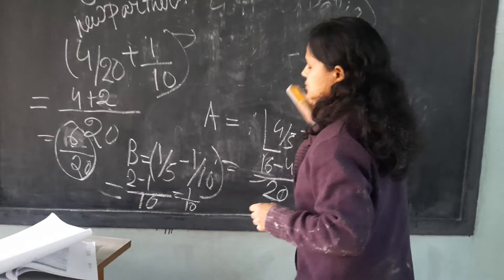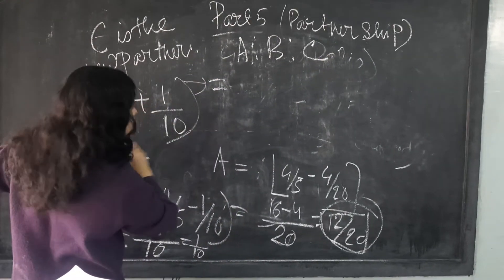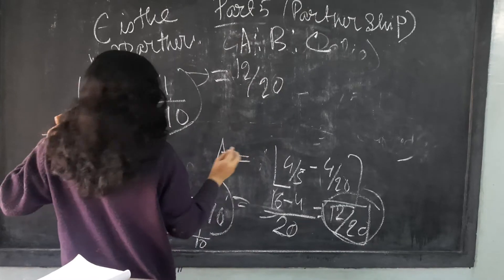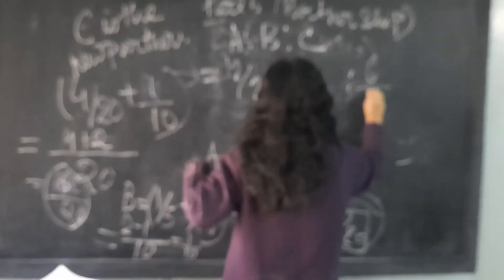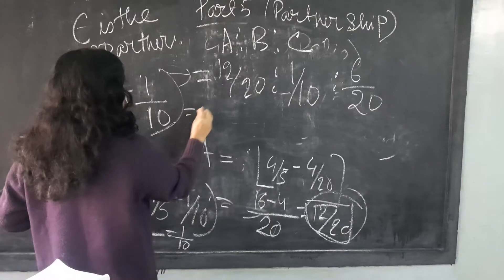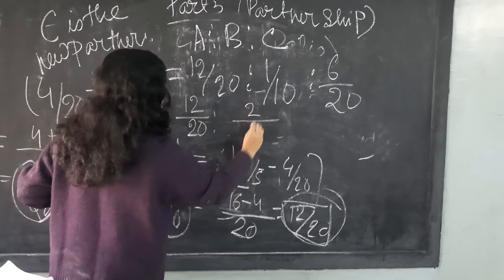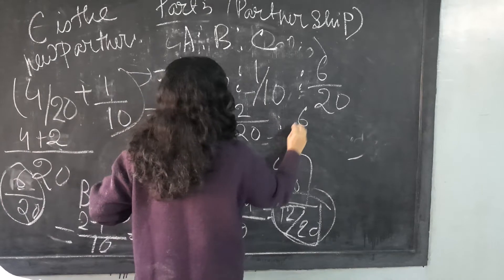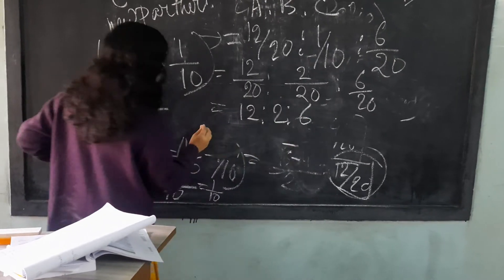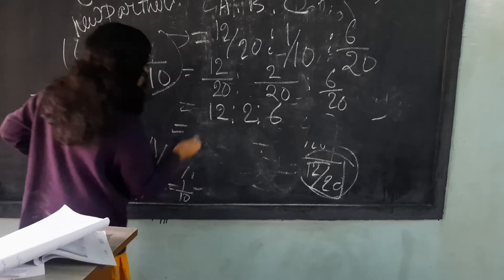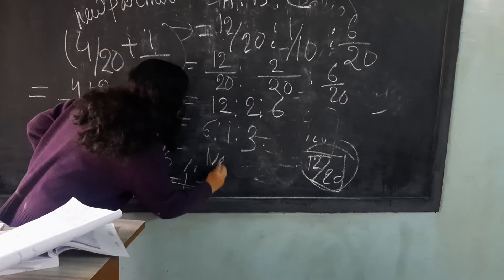You see, A is to B is to C. A is coming 12 by 20, B is coming 1 by 10 — converted to equivalent fraction that is 2 by 20 — and C is coming 6 by 20. So the ratio is 12 is to 2 is to 6, which simplifies to 6 is to 1 is to 3. That is the new profit sharing ratio.